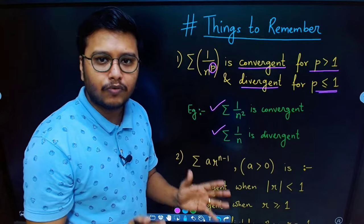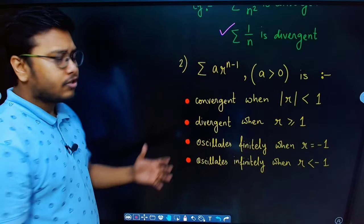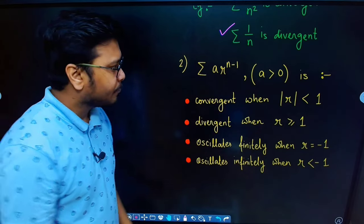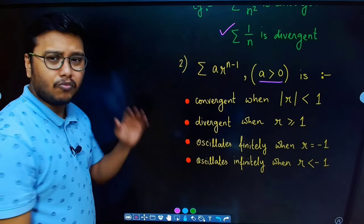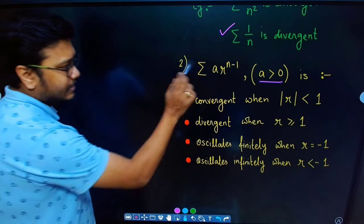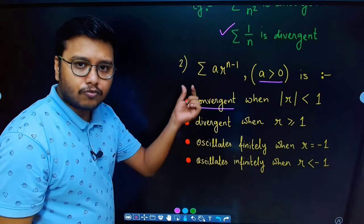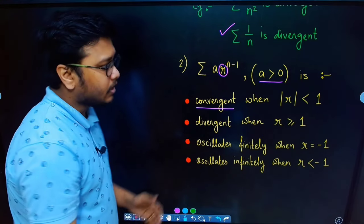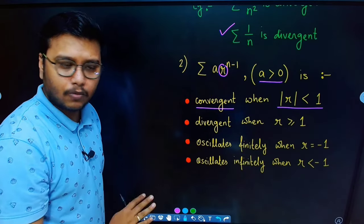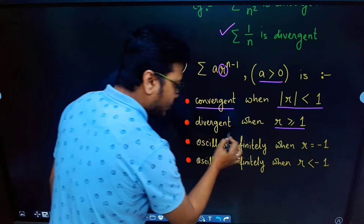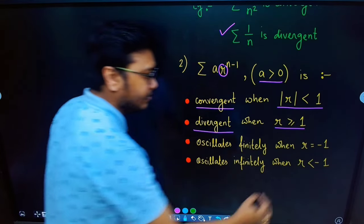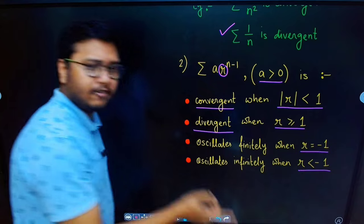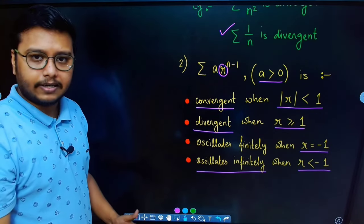One more thing to remember is the geometric series, of the form a·r^(n-1) where a is positive. This infinite series is convergent if the absolute value of r is less than 1. It is divergent if r is greater than or equal to 1. It oscillates finitely if r equals exactly 1, giving plus-minus alternating terms. If r is less than minus 1, it oscillates infinitely.